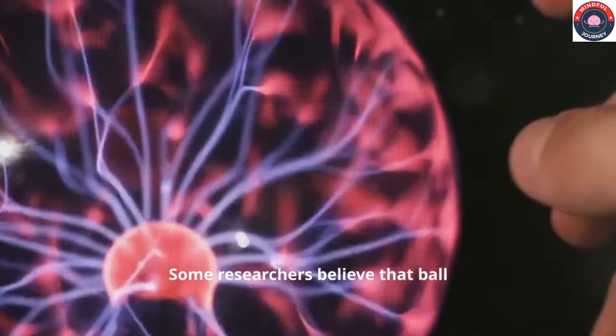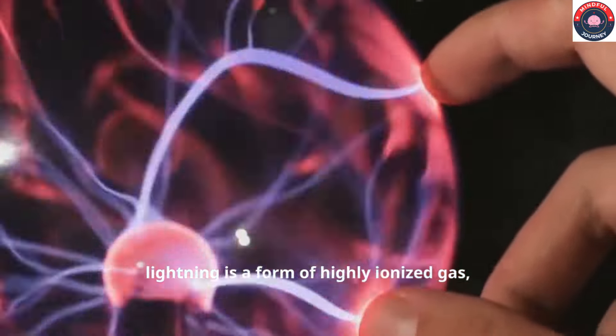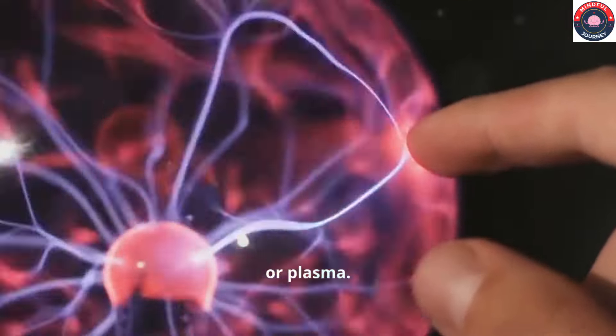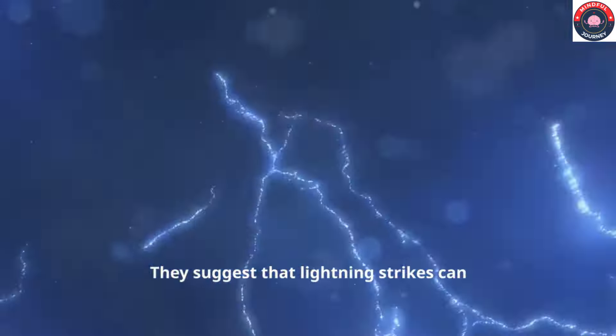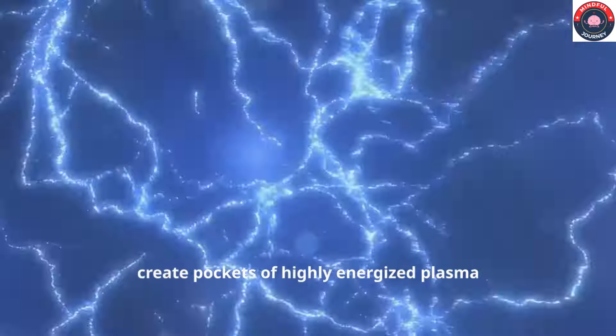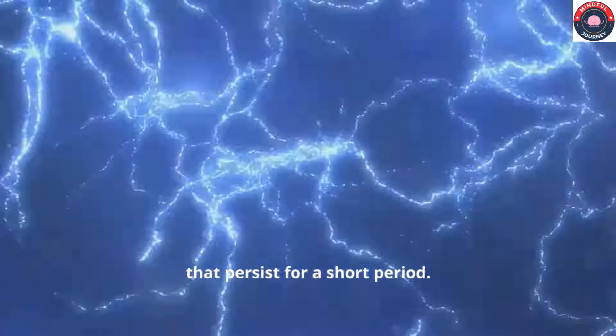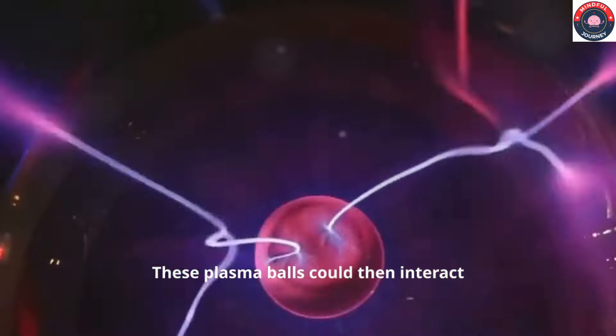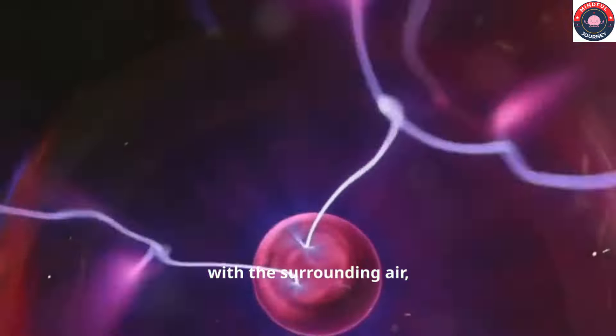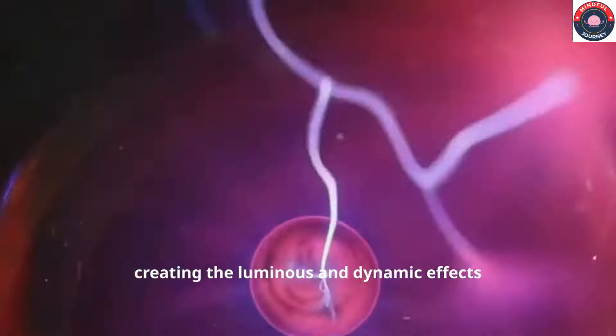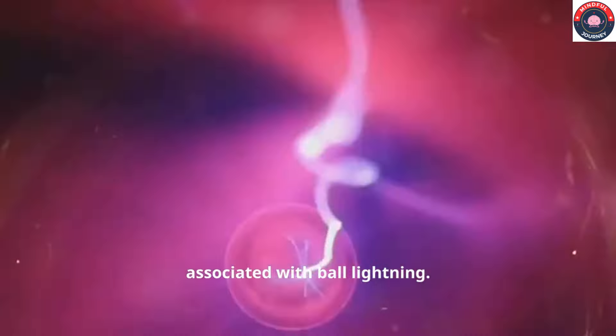Some researchers believe that ball lightning is a form of highly ionized gas, or plasma. They suggest that lightning strikes can create pockets of highly energized plasma that persist for a short period. These plasma balls could then interact with the surrounding air, creating the luminous and dynamic effects associated with ball lightning.